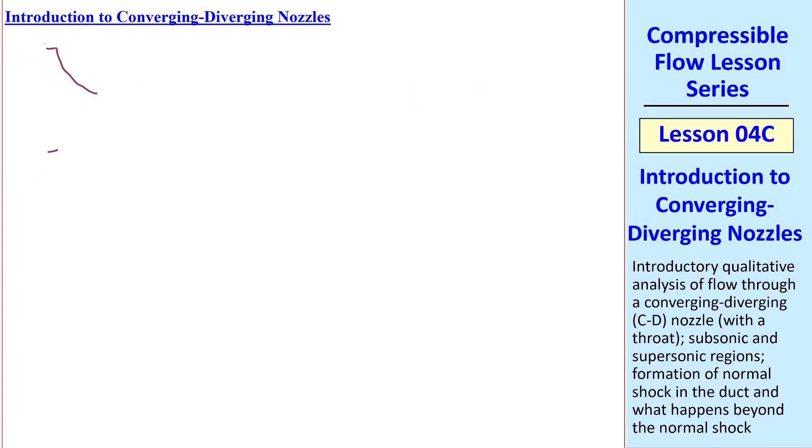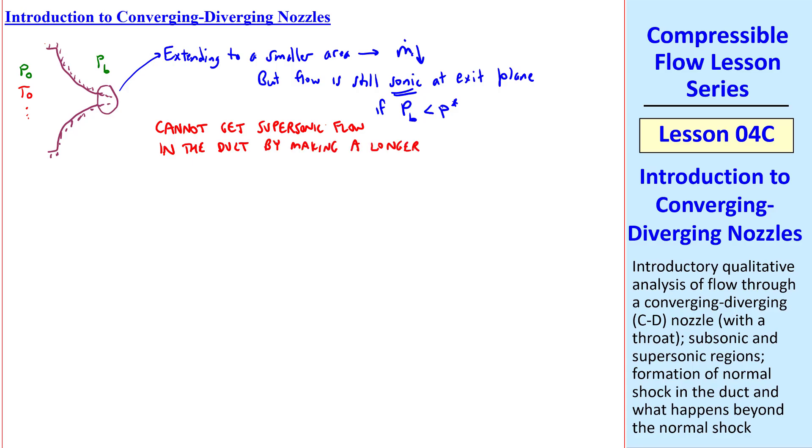By way of introduction, we've been talking for a while about converging nozzles with upstream stagnation properties P0, T0, etc., and back pressure Pb. What happens if we extend this throat? Well, as already discussed, extending to a smaller area reduces the mass flow rate, but the flow is still sonic at the exit plane if Pb is less than P star, the sonic pressure. So we cannot get supersonic flow in the duct by making a longer convergence to a smaller area.